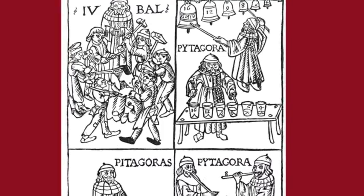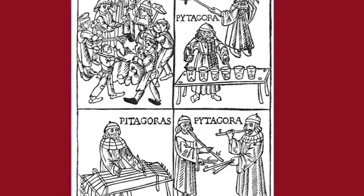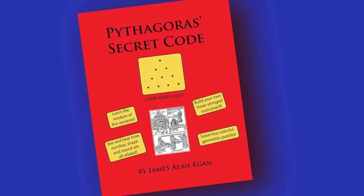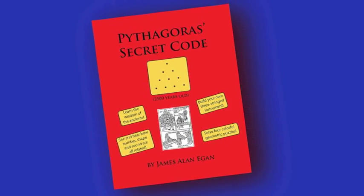The Pythagoras' Secret Code Kit includes a book, four puzzles, and a make-it-yourself musical instrument. The 22-page guidebook explains how wise thinkers throughout the ages have recognized the magic of these ratios.